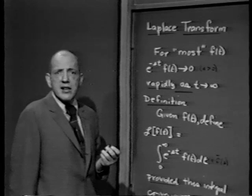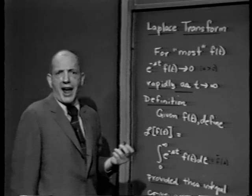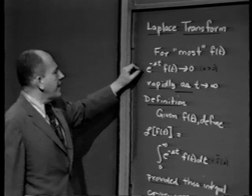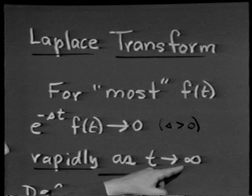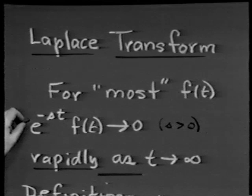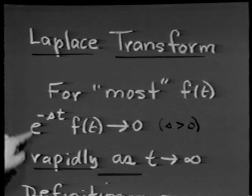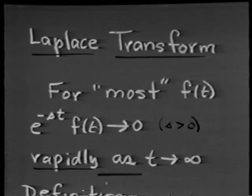The entire idea is this: since most functions can be represented as a power series, and e to the t grows faster than t to the n for any integer n, if we take a function f of t and multiply it by e to the minus st where s is a constant greater than 0, we would expect that e to the minus st times f of t approaches 0 rapidly as t approaches infinity. We'll assume that the integral of e to the minus st f of t dt from 0 to infinity converges.